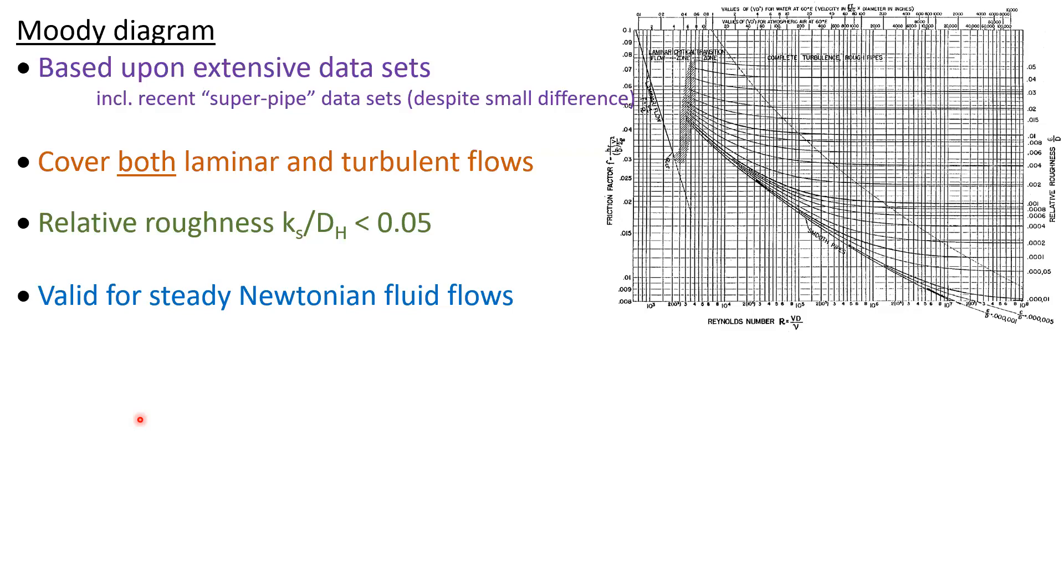The Moody diagram is based upon extensive datasets and is consistent with recent superpipe data, despite some differences. The Moody diagram covers both laminar and turbulent flows and is valid for relative roughness heights ks/Dh up to 0.05.